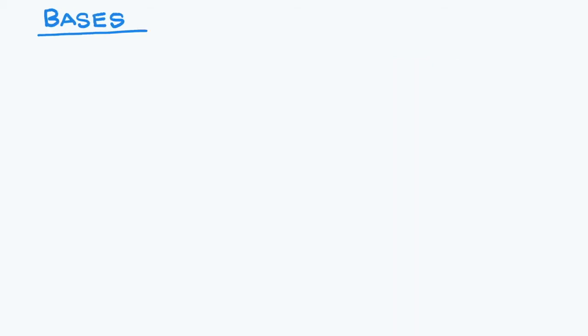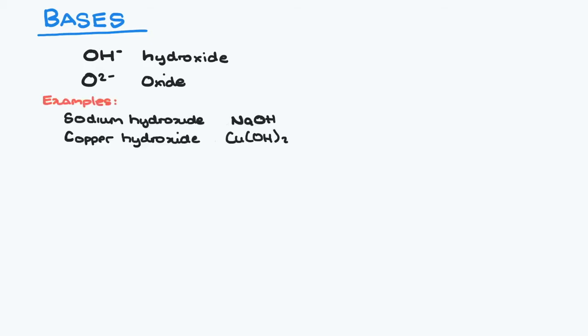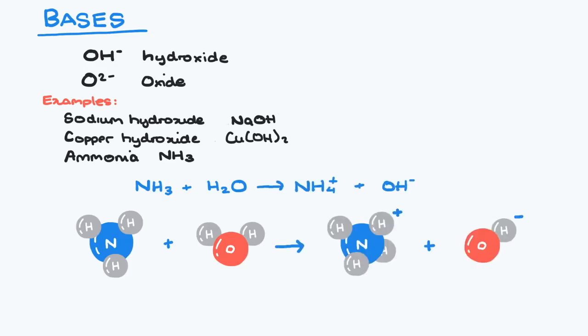Bases are those substances that contain either the hydroxide ion or the oxide ion or produce the hydroxide ion in solution. Popular bases include sodium hydroxide and copper hydroxide. Ammonia is also considered a base as when it reacts with water, it produces the ammonium ion and the hydroxide ion.